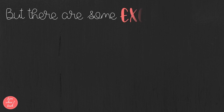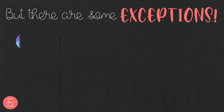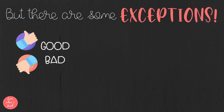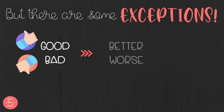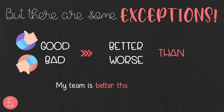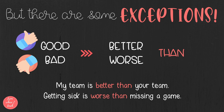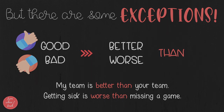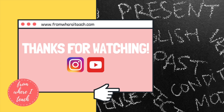There are some exceptions though. The main ones are 'good' and 'bad.' When we have these two adjectives, we don't say 'gooder' or 'bader' — we say 'better' and 'worse.' For example, my team is better than your team, or getting sick is worse than missing a game.